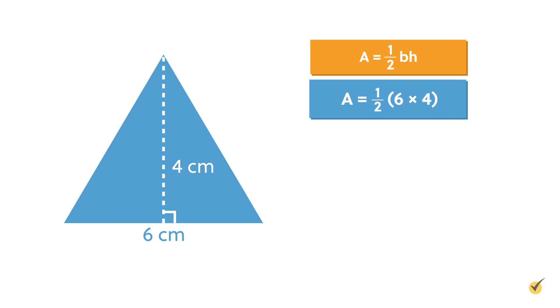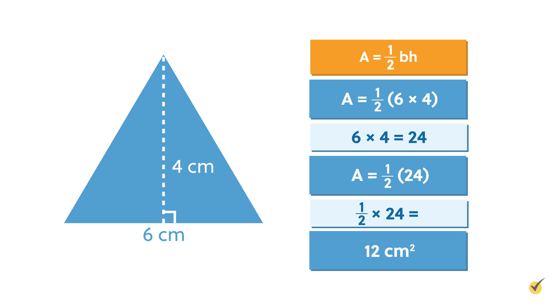A equals one-half times 6 times 4. Start by multiplying 6 times 4 to get a product of 24. Then, multiply one-half times 24, which is the same as dividing by 2, which gives us a solution of 12 centimeters squared.